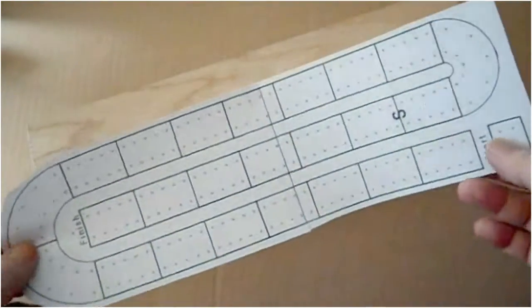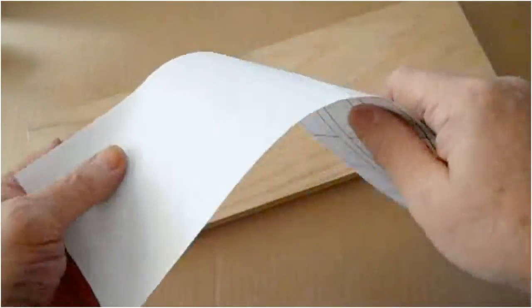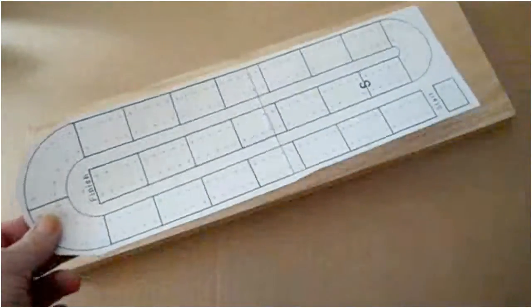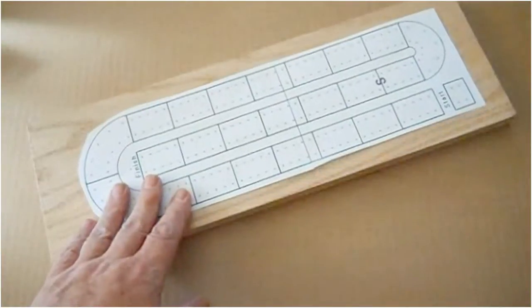The first step is to lay out the track. Use a graphic software to draw the track layout, and then print out the pattern. You might need to use two sheets of paper and splice them together like I did.